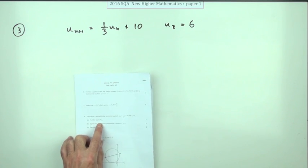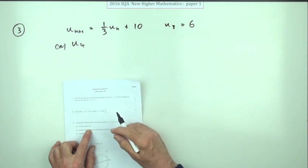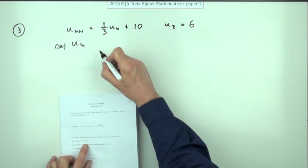You might think, oh, get the value of U4, that's going to take a bit of plodding, working your way up to that, but no, it gives you U3, so you're just one away.